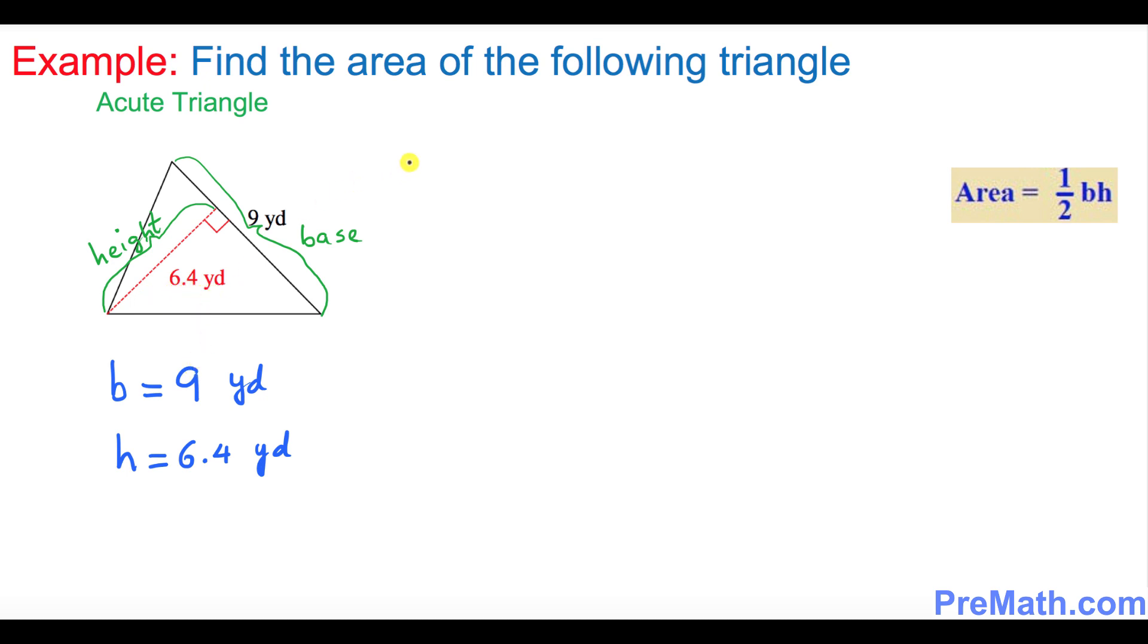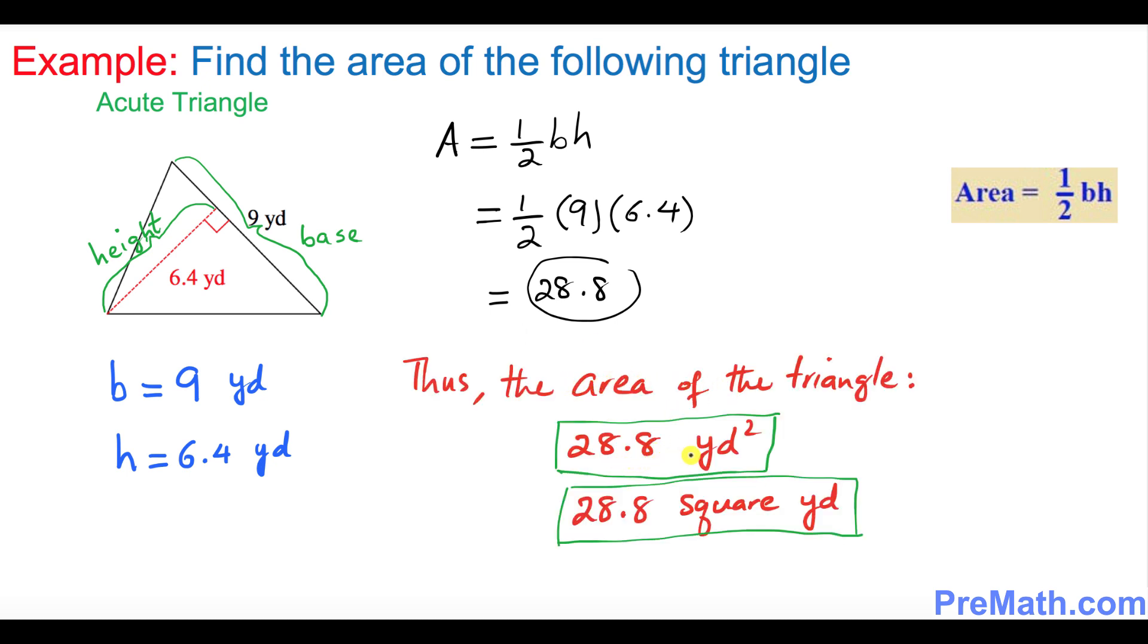Now we're going to apply our area formula, which is one over two times base times height. We apply the values: one over two, base is 9 yards, and height is 6.4. If you multiply it out, that's gonna be 28.8. Thus the area of the triangle is 28.8 yard squares, or 28.8 square yards—both answers are acceptable.